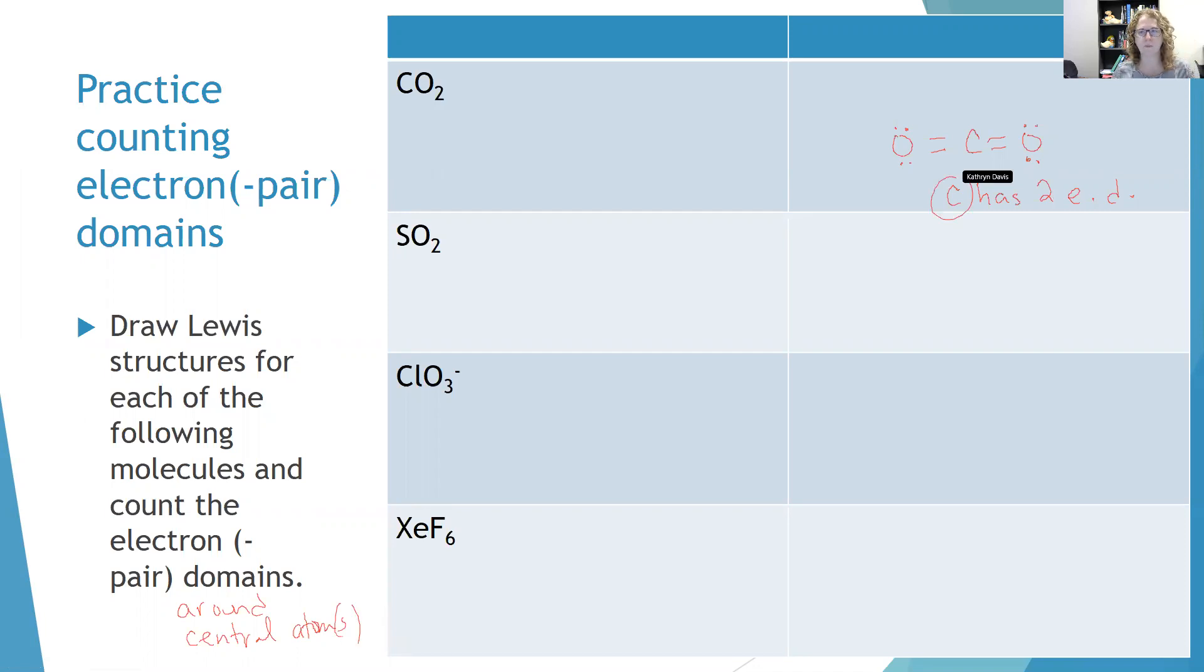Let's try SO2. So here's my Lewis structure of SO2. Different from CO2 because I have this extra lone pair around the sulfur. And that's why I would say that the sulfur has three electron domains. The double bond, the other double bond, and the lone pair.